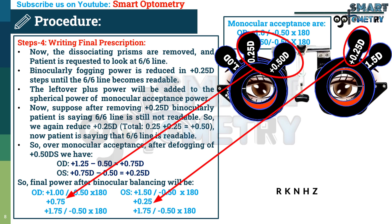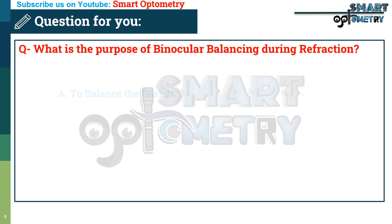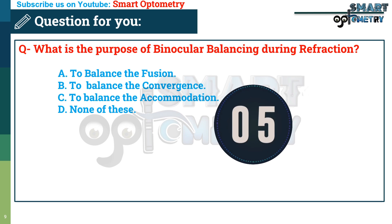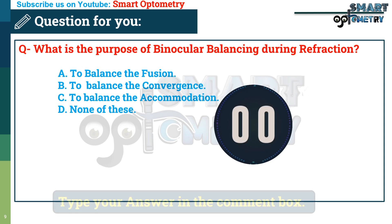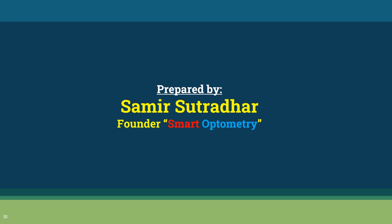The prism dissociation method is time-consuming and a complex procedure. You need a highly intelligent and cooperative patient to perform this test. In upcoming videos, I will discuss other methods of binocular balancing so that you can choose the best procedure for your practice. Stay with Smart Optometry and study optometry smartly.